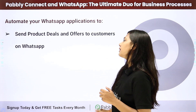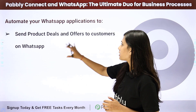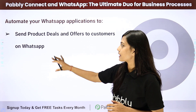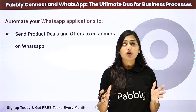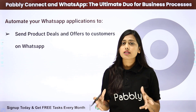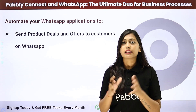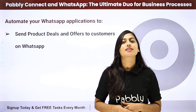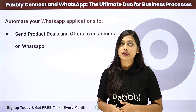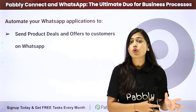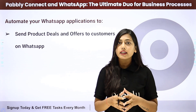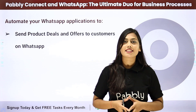The next automation is to send product deals and offers to customers on WhatsApp. Whenever there is a special occasion and your company organizes new offers or deals — like a sale — you can take the data of all the new offers from one place, combine it with your existing customers' data, and then integrate it with WhatsApp to send those offer and deal notifications to your existing customers.